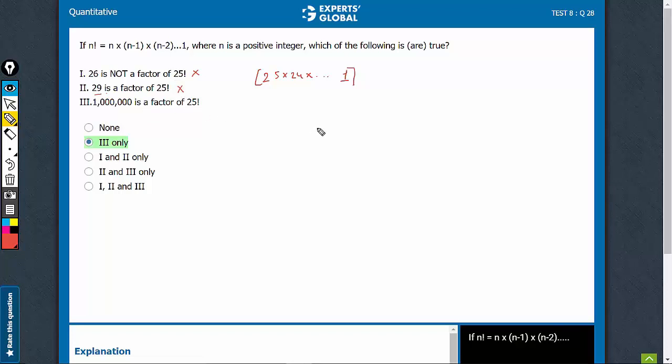Look at the last one. This is 1 million, 10 raised to power 6. Don't take it as 10 raised to power 6, take it as 2 raised to power 6 into 5 raised to power 6. When you expand 25 factorial, intuitively you can see 2 raised to power 6 will not be a problem. 8 itself has 3 2's in it, 16 has 2 raised to power 4 in it.